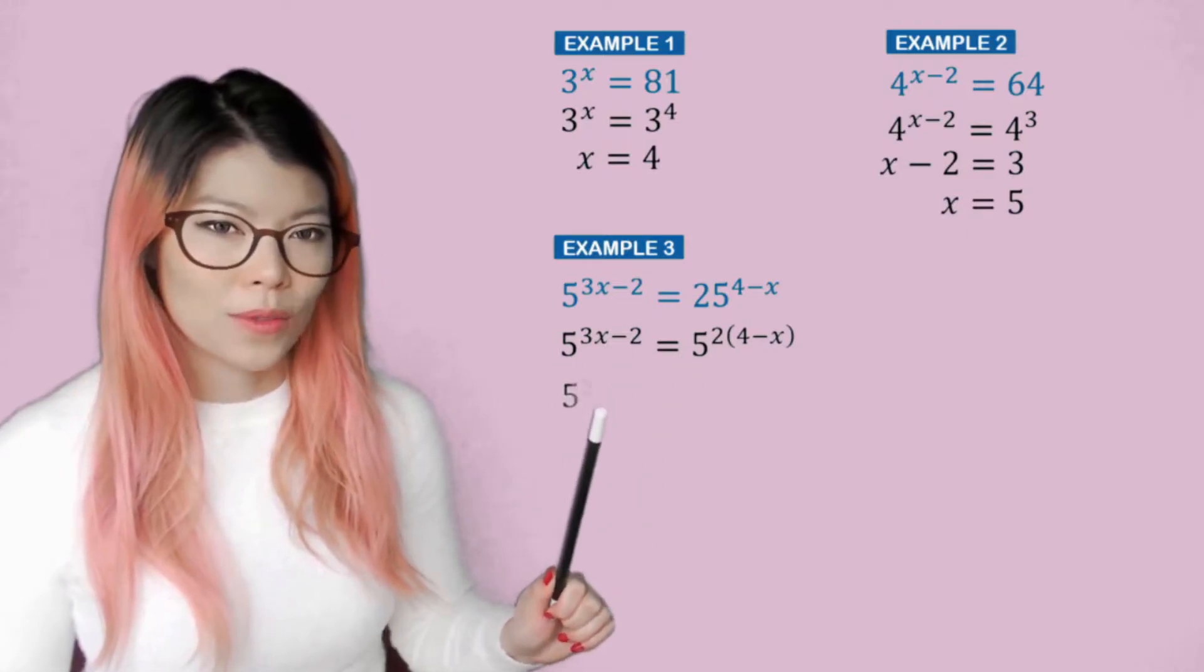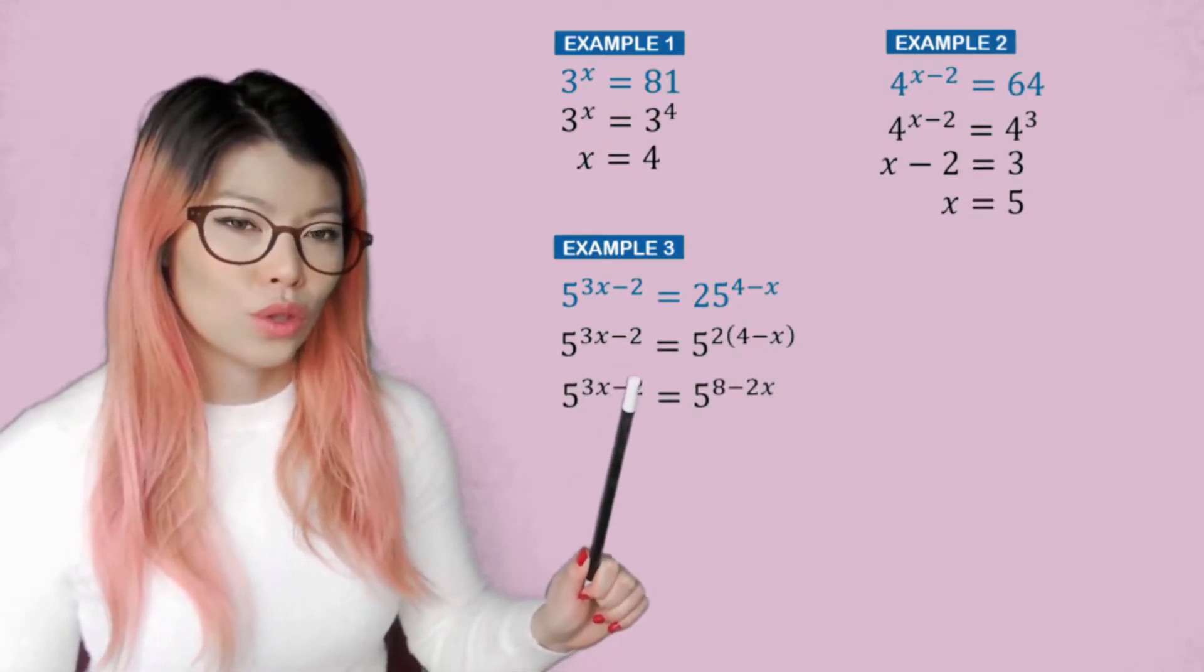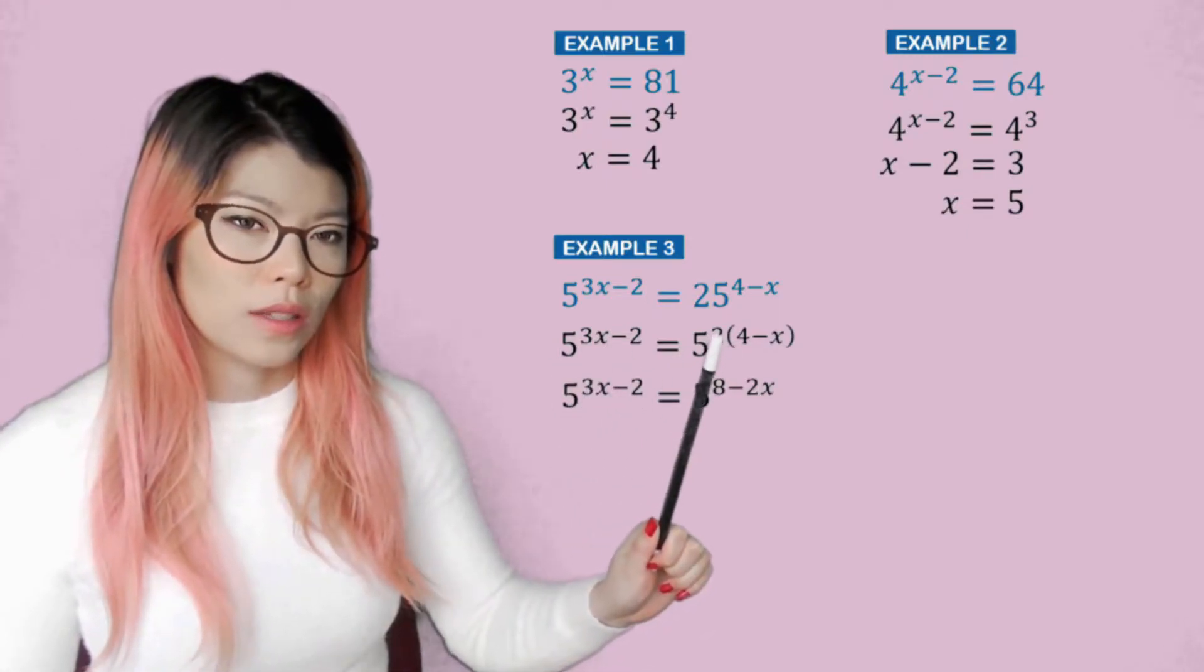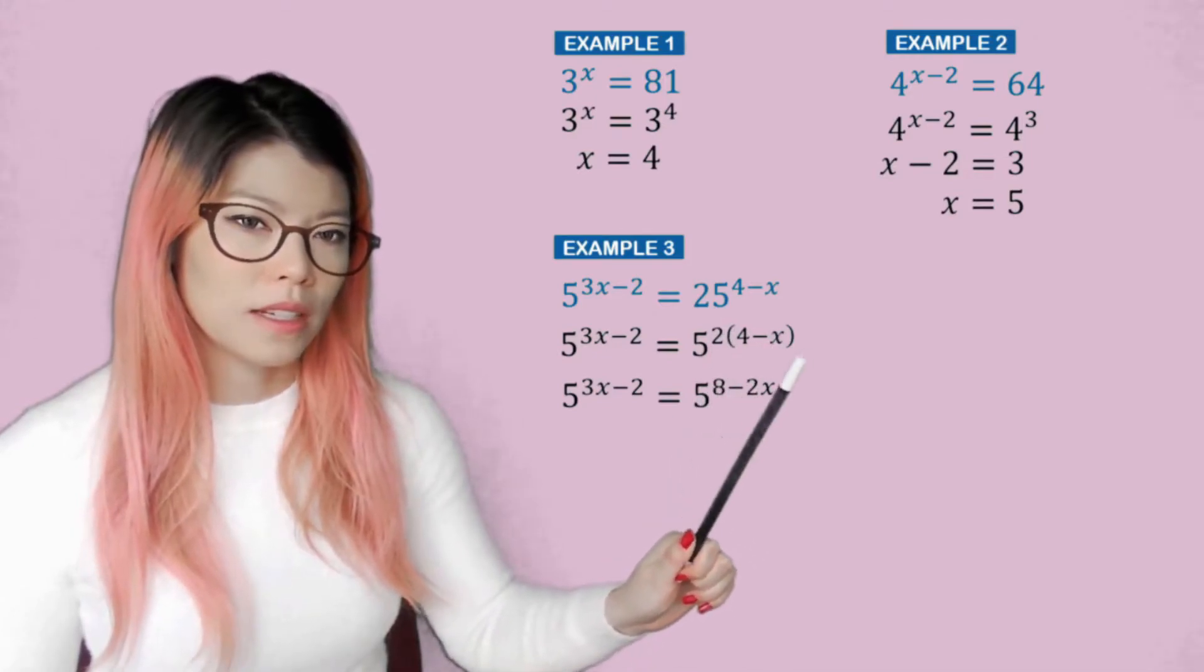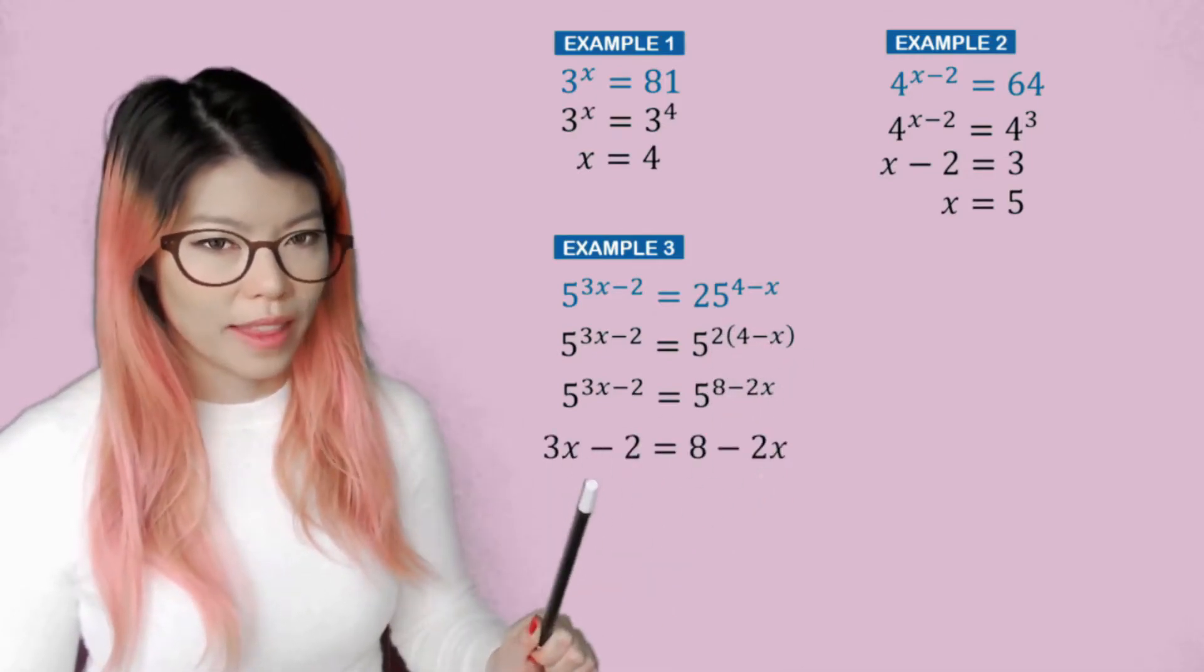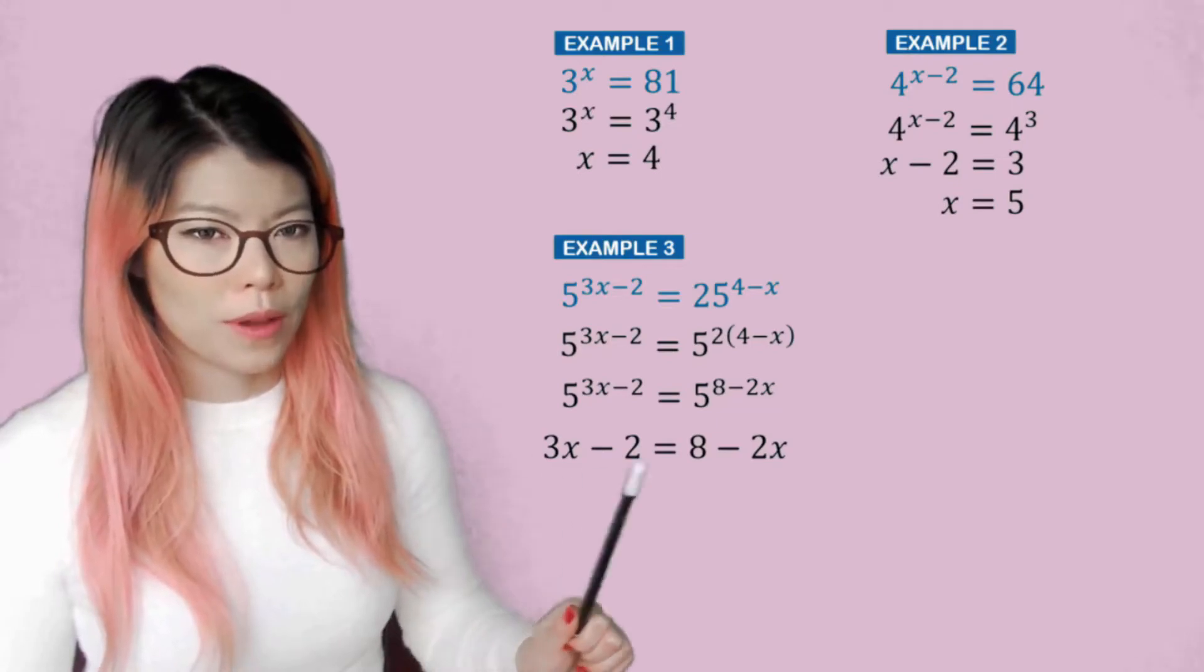So now we have the same base. So we can see that the 3x minus 2 is equal to 2 times 4 is 8 minus the 2x. So let's equate that.